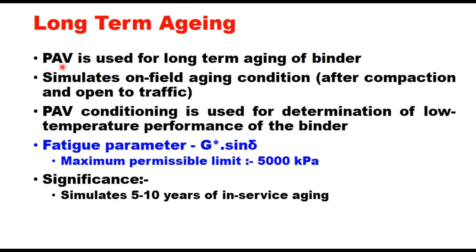The pressure aging vessel (PAV) is used for long-term aging of binder, simulating in-field aging conditions after compaction when the layer is open to traffic. PAV conditioning is used for determination of low-temperature performance. When the PAV-aged binder is tested in the dynamic shear rheometer, we determine G* sine delta — the fatigue parameter — with a maximum permissible limit of 5000 kPa. The temperature at which you get a value less than 5000 kPa is the intermediate temperature, and the significance is that it simulates 5 to 10 years of in-service aging.